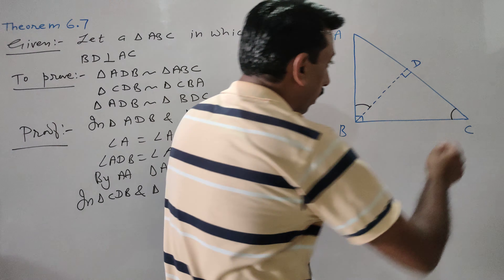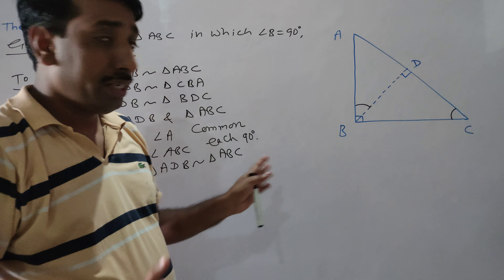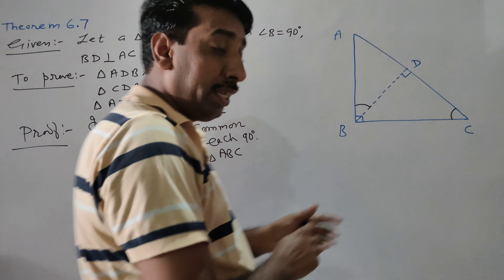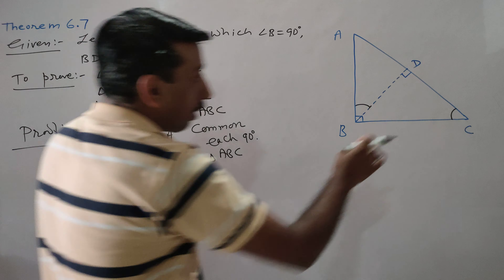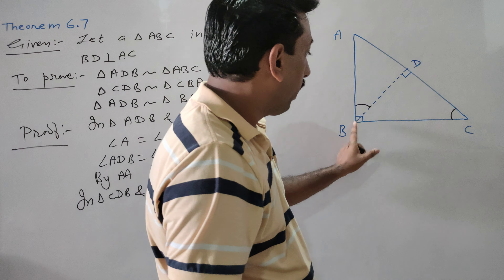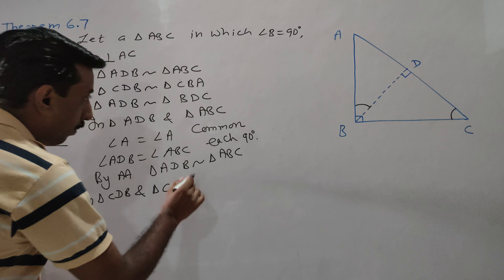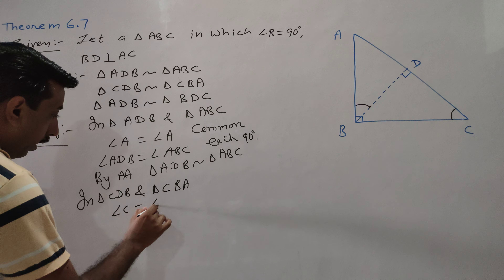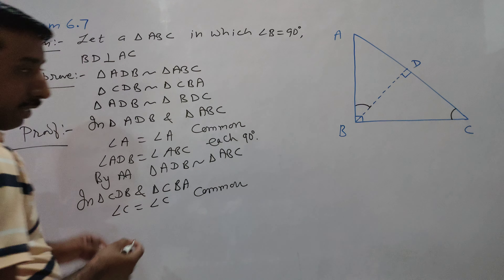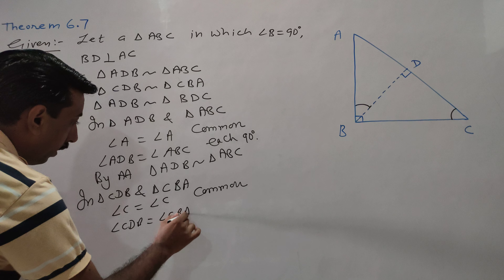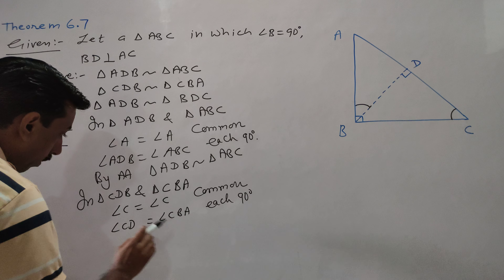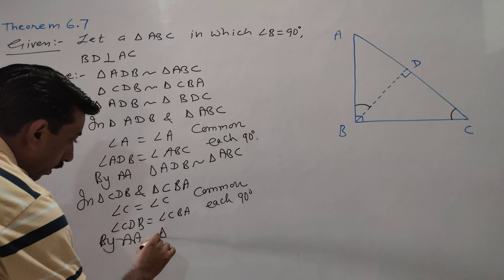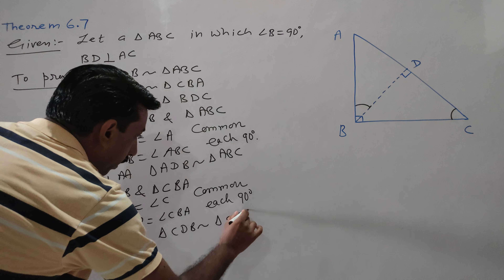For triangle CDP, according to the naming convention: C, D, B. Angle C, D, B — angle D is 90 degrees. It is equal to 90 degrees. So triangle CDB is similar to triangle CDA by the corresponding parts and angle relationships.